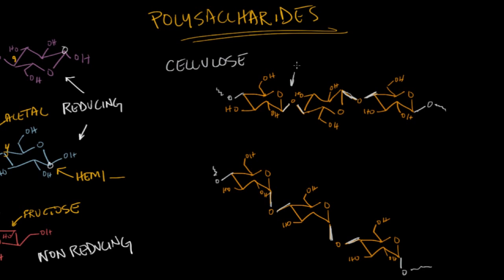All of these are beta 1,4 glycosidic linkages. It forms an unbranched, just kind of straight chain. That's the polysaccharide cellulose.